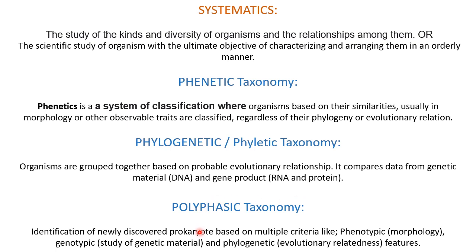Then comes polyphasic taxonomy. Polyphasic is where identification of a newly discovered prokaryote is done based on multiple criteria: phenotypic — meaning morphology; genotypic — meaning genetic material study; and phylogenetic — meaning evolutionary relatedness. All these criteria are applied and the newly discovered prokaryote is identified and classified.